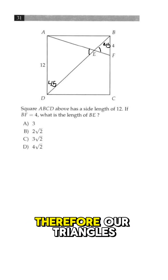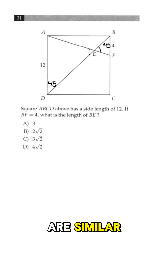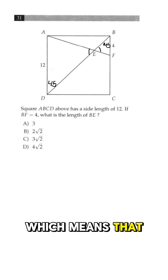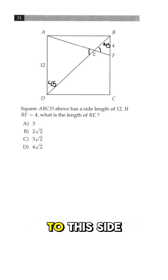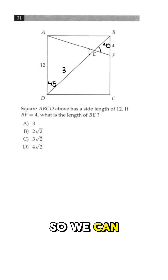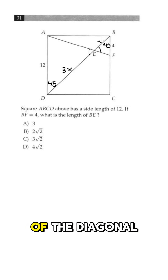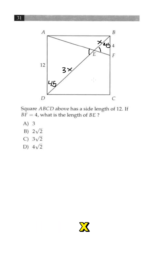Therefore, our triangles are similar, which means that if the proportion of this side to this side is 3 to 1, then the proportion of this side to this side will also be 3 to 1. So we can call this part of the diagonal 3x and this part of the diagonal x.